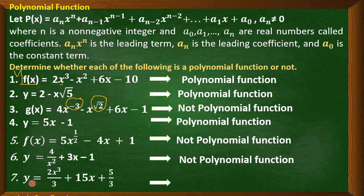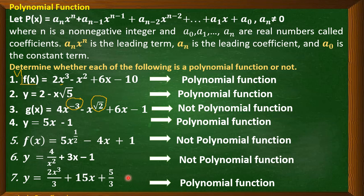Number seven: y = (2x³)/3 + 15x + 5/3. This is a polynomial function. We can have a constant term that is a fraction as well as a leading coefficient that is a fraction.